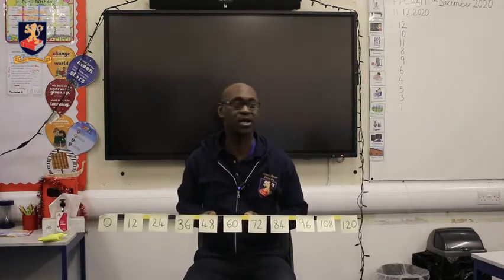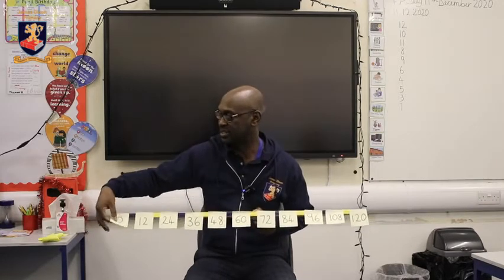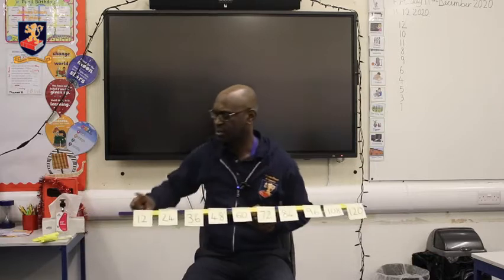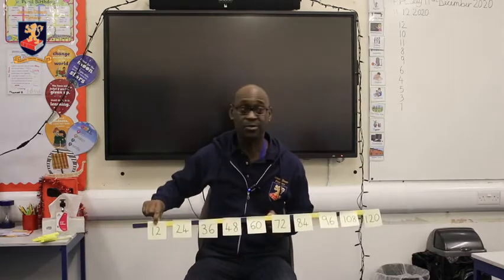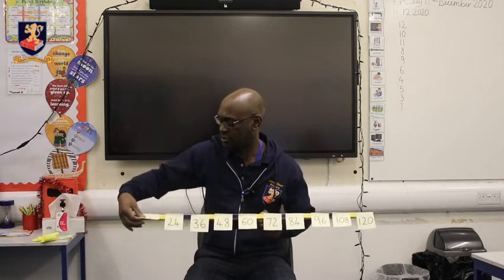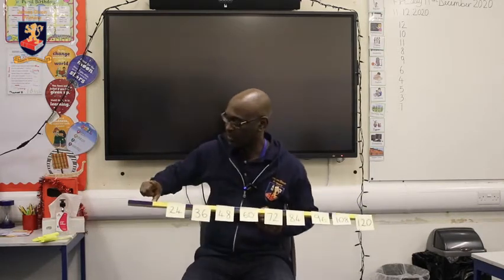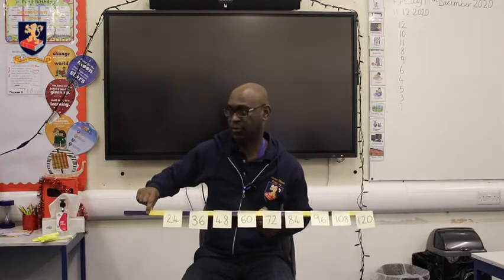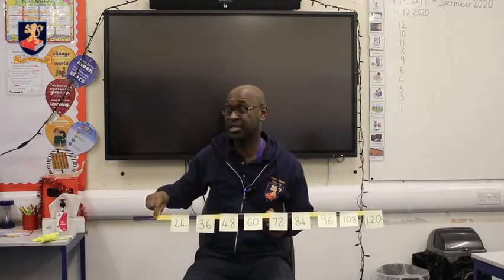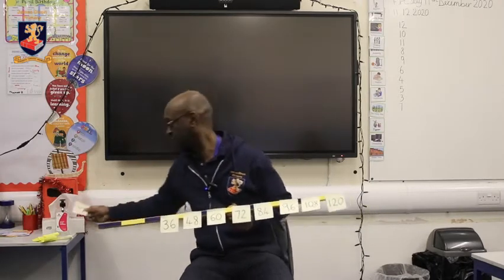Well done. We always know we begin with 0, so I do not need that. We are counting in 12s, so 1 lot of 12 would be 12 — I don't believe you need that either. If 1 lot of 12 is 12, then 2 lots of 12 is going to be 24. So I believe I can remove 24.